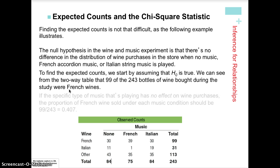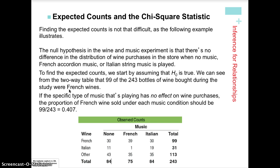The expected values are calculated as row total times column total divided by grand total. For example, for French wine with no music playing: the row total is 99, times the column total of 84, divided by the grand total of 243 — that gives the expected count for that cell. We calculate expected counts for every single cell. With three categories of music and three of wine, that's nine calculations. The row and column totals in the expected table should match those in the observed table.